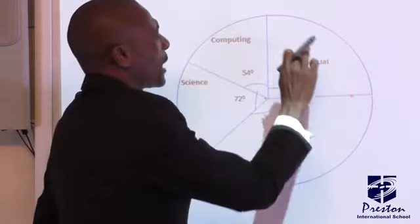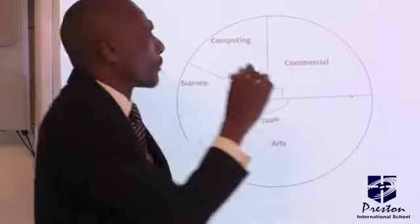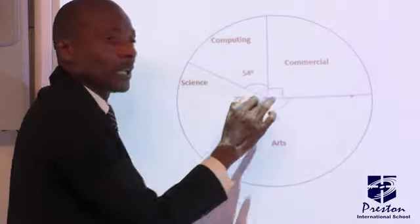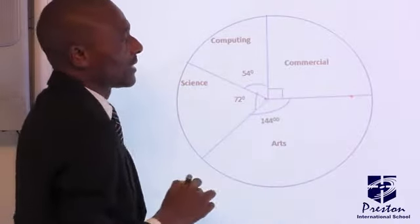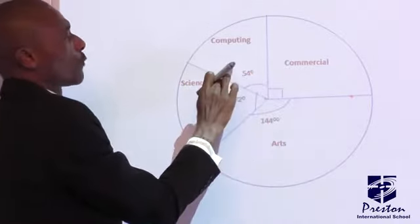From this last point, get angle 90. For 90, I'm not putting 90 degrees. I will just signify by using a right angle sign, meaning it's 90 degrees. I don't need to put 90. This is commercial. From this last point, get angle 54.